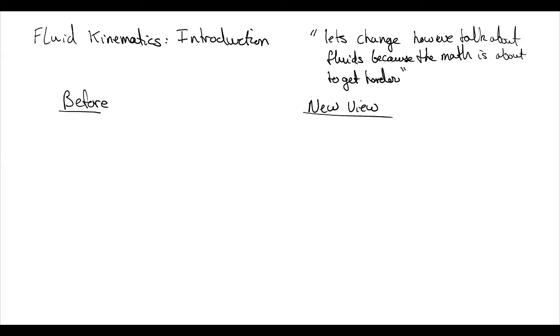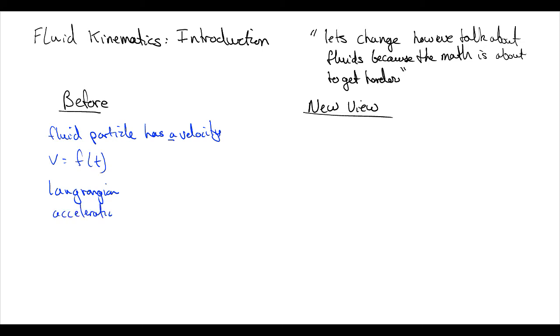Before, we used to talk about how a fluid particle has a velocity. In Bernoulli's we would talk about how the fluid has a velocity v at a point, and that velocity v is equal to some function of time. This is what we would call a Lagrangian point of view, where the acceleration is something we're very familiar with, just dv/dt, the rate of change of the velocity with time.